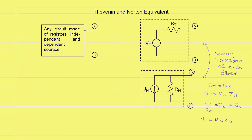To summarize: Thevenin and Norton equivalents allow us to replace any circuit at two terminals A and B by either the Thevenin or the Norton equivalent. Each of these equivalents requires the calculation of two values — either the Thevenin voltage and the Thevenin resistance, or the Norton current and the Norton resistance. These two values can be found by first calculating the open circuit voltage between the terminals A and B and then the short circuit current between these two terminals. We will take an example circuit in the next video and calculate the Thevenin and Norton equivalents.